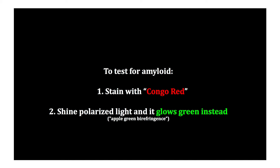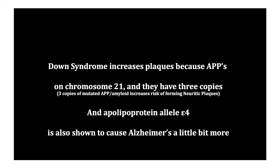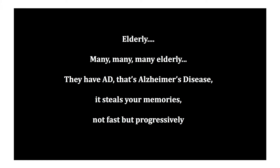To test for amyloid, stain with Congo red, shine polarized light and it glows green instead. Down syndrome increases plaques because APP is on chromosome 21 and they have three copies. Apolipoprotein allele E4 is also shown to cause Alzheimer's a little bit more.